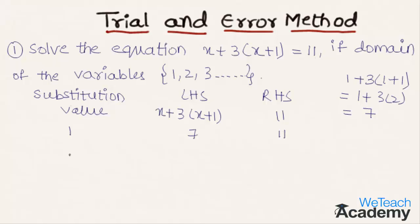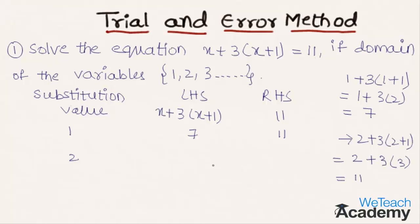Similarly, substituting x equal to 2 on the left hand side we get 2 plus 3 into 2 plus 1, which implies 2 plus 3 into 3, and we get the LHS value as 11. The RHS value is also 11.